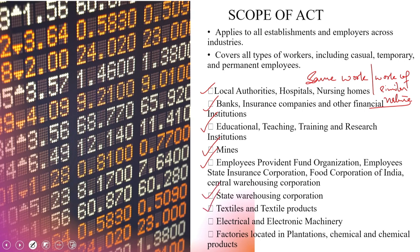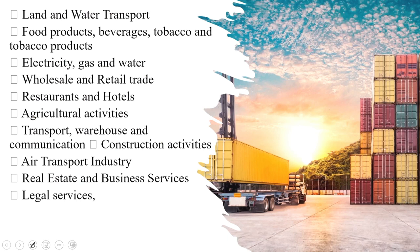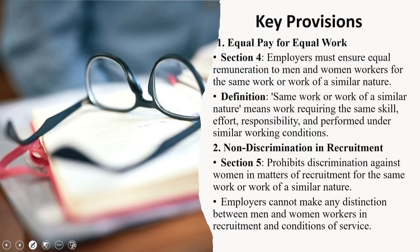Textile and textile products, electrical and electronic machinery, factories located in plantations, chemical and chemical products are part of it. The list goes on — land and water transport, food products, beverages, tobacco and tobacco products, electricity, gas, water, wholesale and retail trade, restaurants and hotels, agriculture activities, transport, warehouse and communication, construction activities, air transport industry, real estate business, and legal services are all covered. This illustrates the exhaustive nature of the applicability of this particular act.